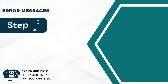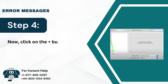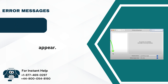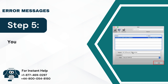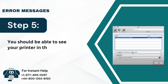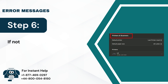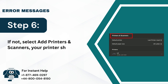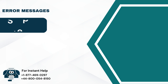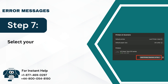Step 4: Now click on the plus button and a list will appear. Step 5: You should be able to see your printer in the list; if so, add it back. Step 6: If not, select Add Printers and Scanners — your printer should be in the default list. Step 7: Select your printer and click on Add Printer.